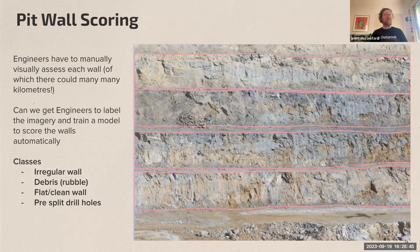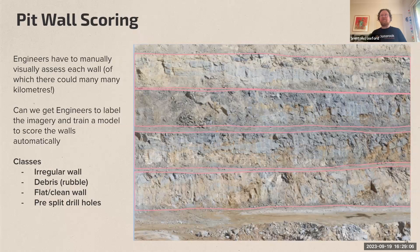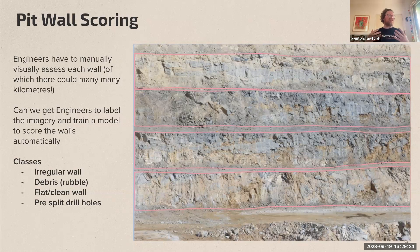Geotechnical engineers spend a lot of time monitoring pit walls — the walls keep everything up and everyone safe. Movement, shape, and overall appearance are all important factors. This case comes from a very large mine in West Africa with something like 70 kilometers of wall that engineers had to analyze on a regular basis. A drone flew around collecting imagery of the walls, but that just meant engineers had to sit and look through 70 kilometers of wall imagery — they had the data but it didn't free up their time.